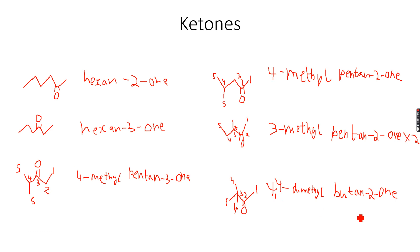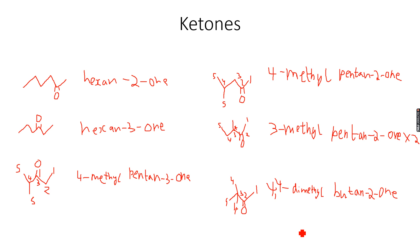So this compound is 4,4-dimethylbutane-2-one: '4,4' because there are two methyl groups on the fourth carbon atom, 'dimethyl' for two methyl groups, 'butane' for four carbons in the main chain, and '2-one' because the carbonyl group is on the second carbon. This compound will not have any geometric isomers — no carbon-carbon double bond — and no chiral center, so no optical isomers either.